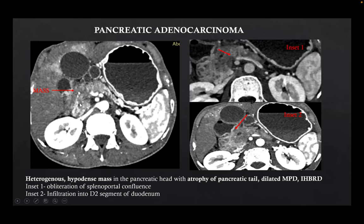This was a case of pancreatic adenocarcinoma. We can see a heterogeneous hypodense mass in the pancreatic head with atrophy of the pancreatic tail, dilated main pancreatic duct (MPD), and intrahepatic biliary radicle (IHBR) dilatation. In insert 1, we can see obliteration of the splenoportal confluence, and in insert 2, we can see infiltration into the D2 segment of the duodenum.